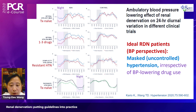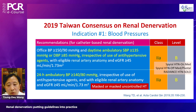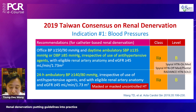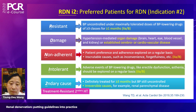Summarizing recent renal denervation trials' inclusion criteria around blood pressure: ambulatory blood pressure monitoring is key, enabling identification of patients with masked hypertension or masked uncontrolled hypertension — both of whom are ideal candidates.